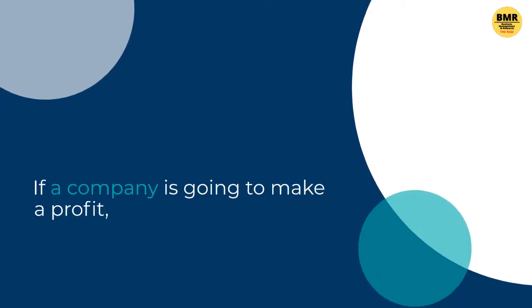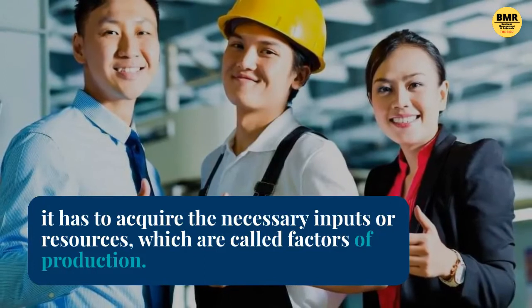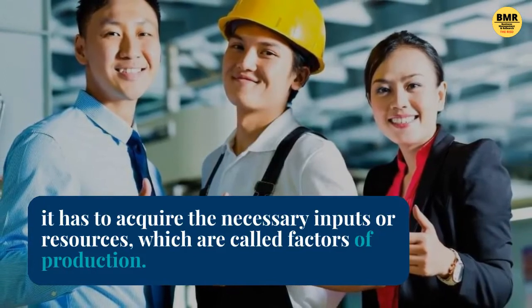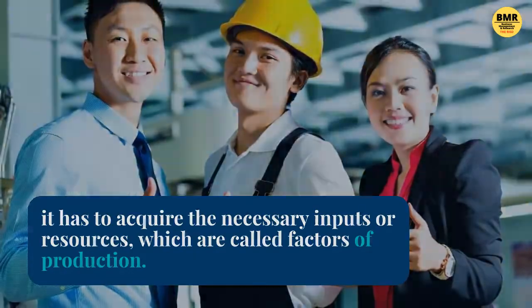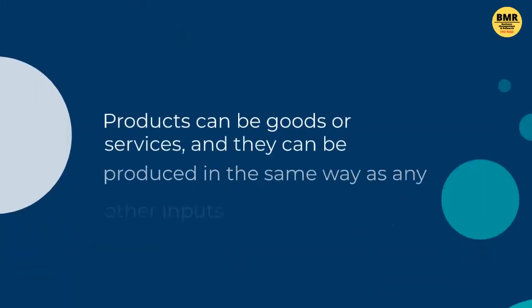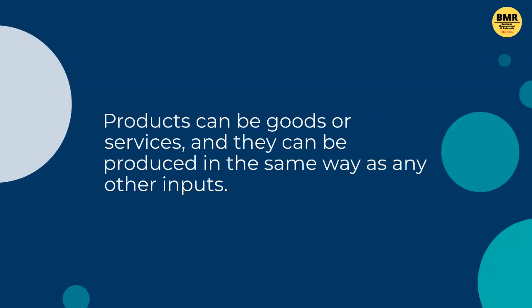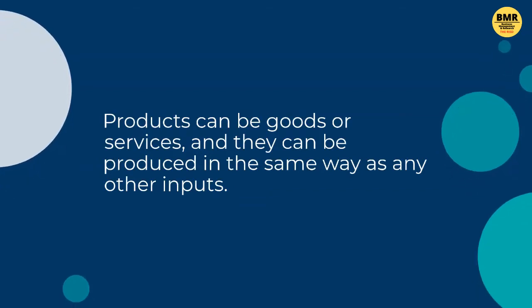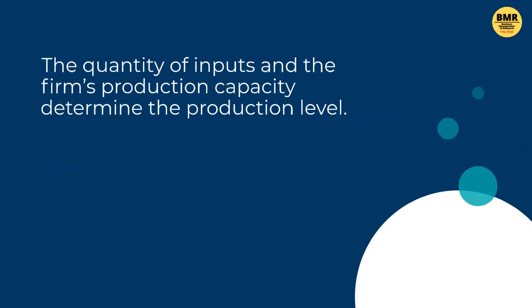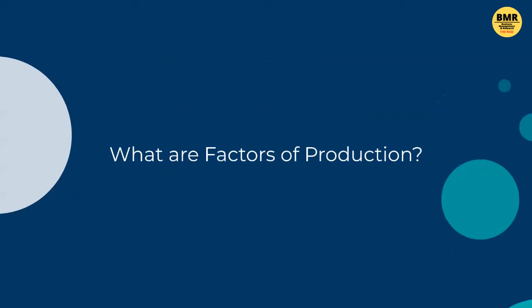If a company is going to make a profit, it has to acquire the necessary inputs or resources, which are called factors of production. Products can be goods or services and they can be produced using these inputs. The quantity of inputs and the firm's production capacity determine the production level.